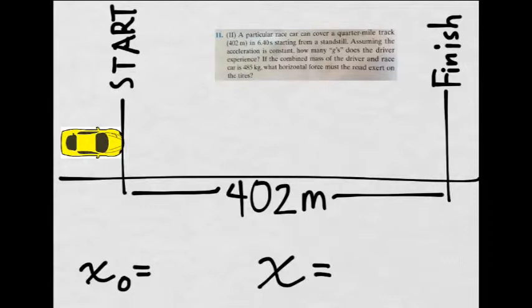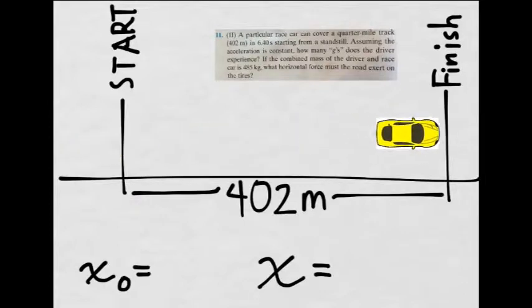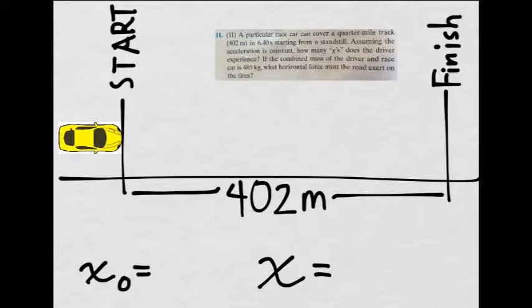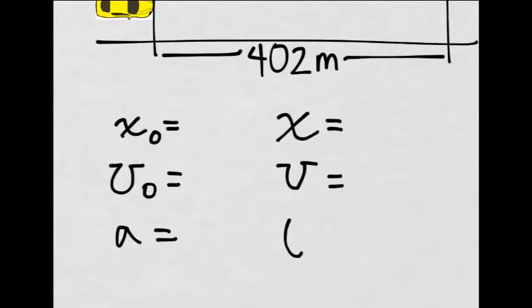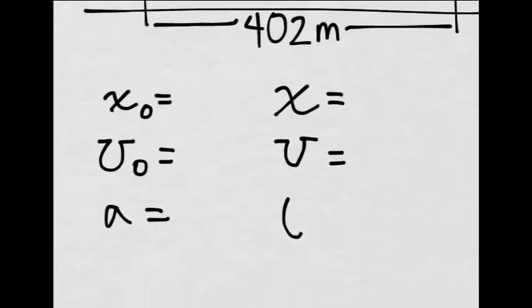So we're asking, this car travels this amount of length in 6.40 seconds, we want to find the acceleration. So we're going to have to tap into our kinematic equations again, but in one direction.